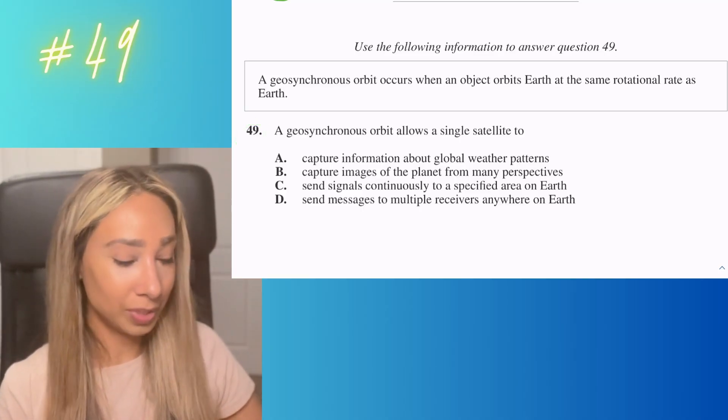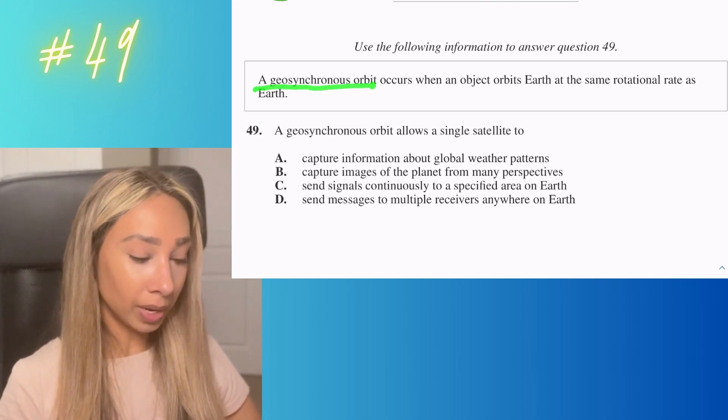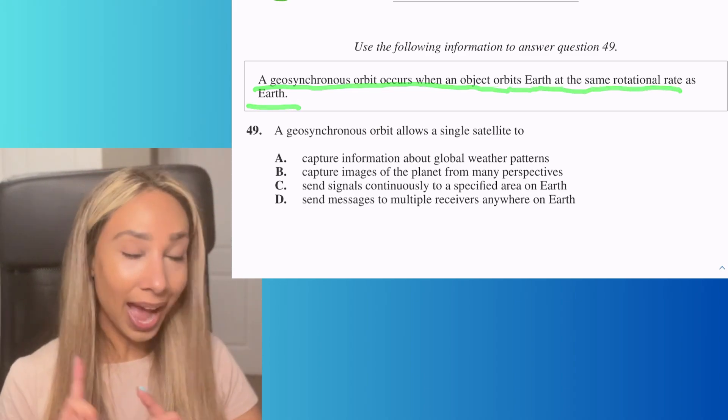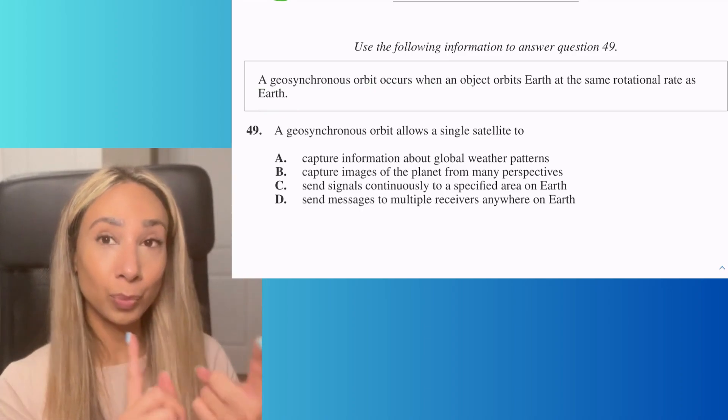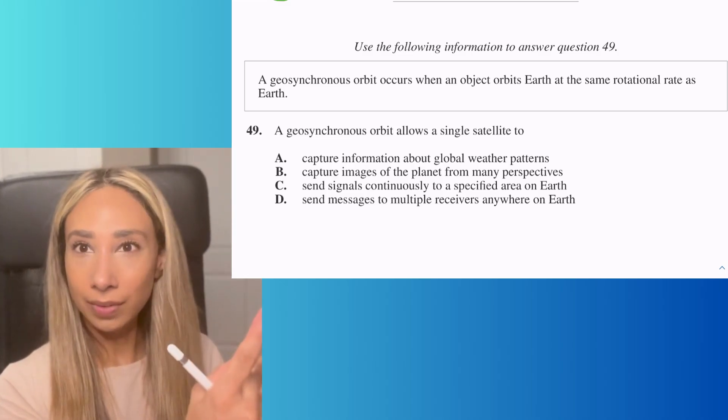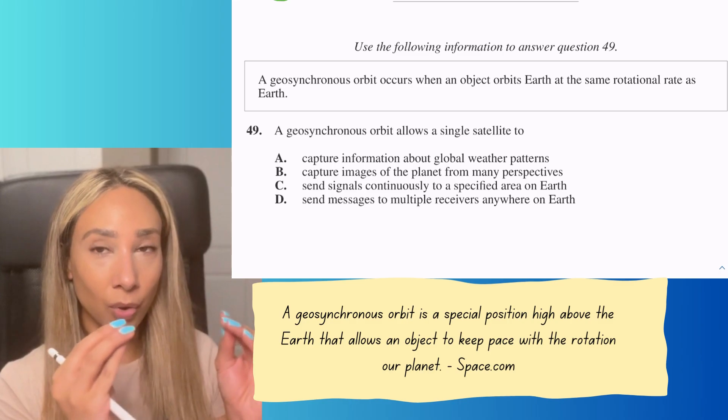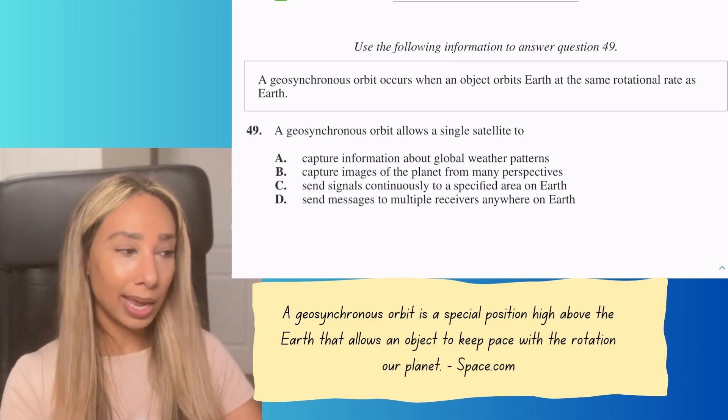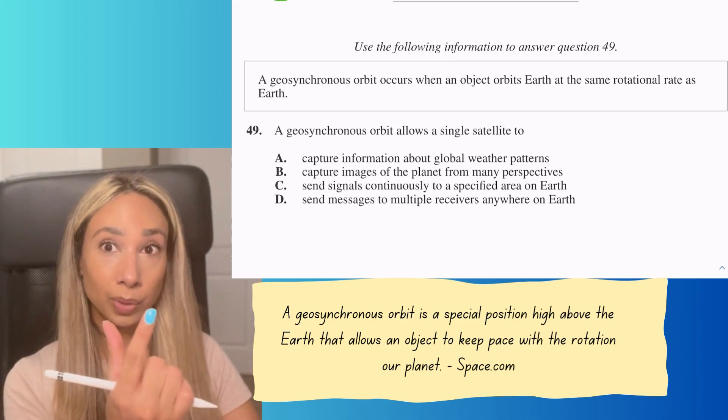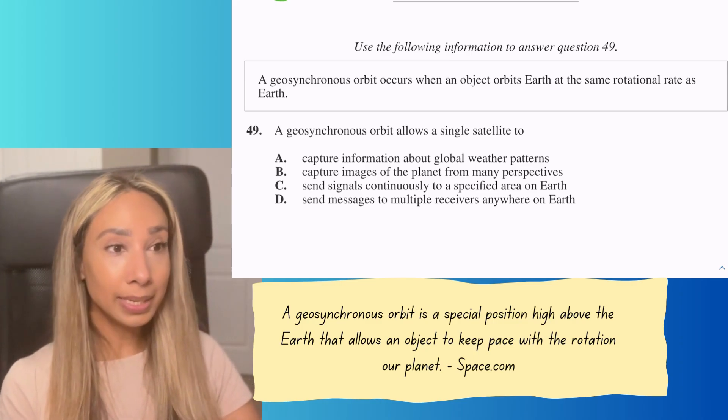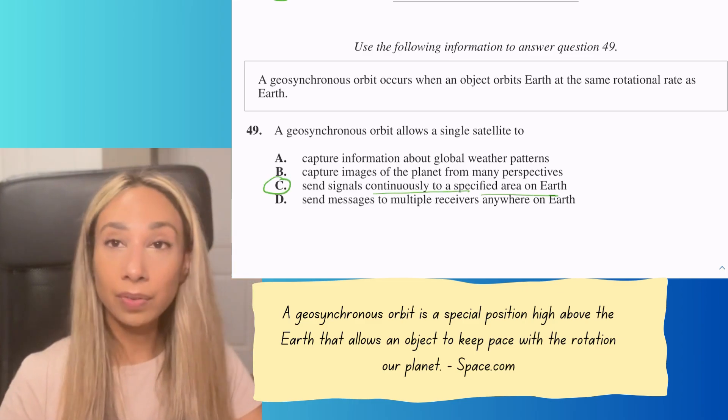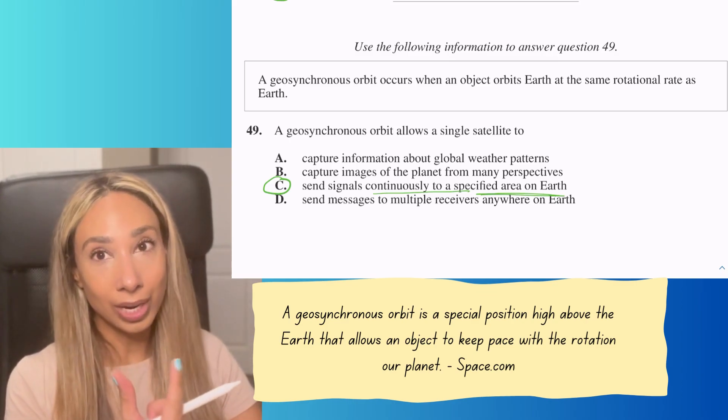Number 49. We have to apply a concept to different options. A geosynchronous orbit occurs when an object orbits Earth at the same rotational rate as Earth. You have something going around Earth, but it's moving at the same rate as Earth is moving. The two are connected through the orbit. That means it's going to allow the two to be in connection with one another. The answer is C: it sends signals continuously to a very specific orbit on Earth. They're working together as Earth is rotating.